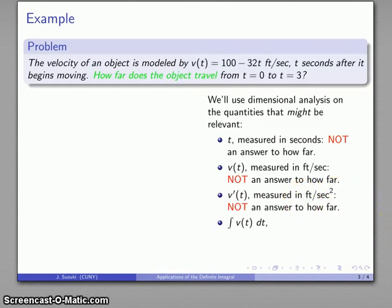Well, I hope this definite integral of v(t) dt actually answers the question 'how far', because it's the only thing we have left. But let's not just rely on hope; let's look at the units that we're measuring the quantity in. So this integral of v(t) dt is going to be measured in feet, and so that tells me that this could possibly be an answer to the question 'how far does an object travel'.